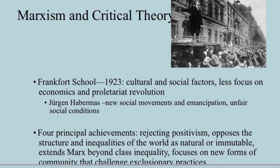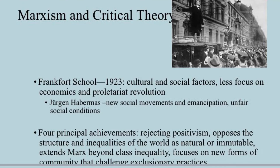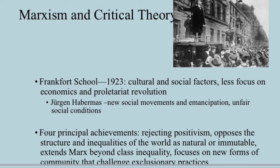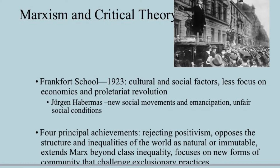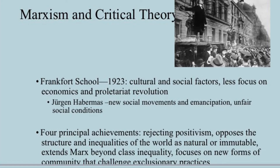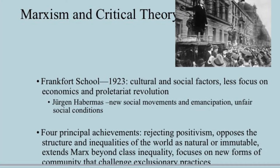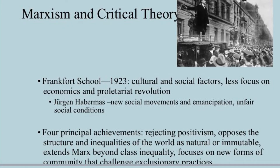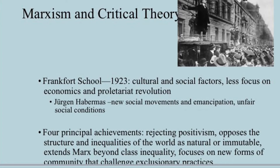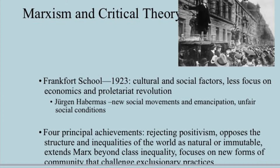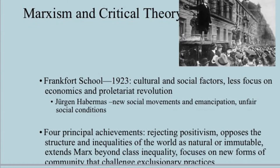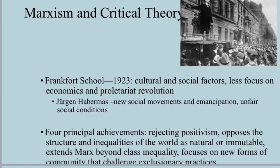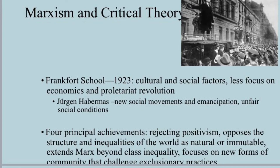Other Marxist schools like the Frankfurt School and Habermas relate to the importance of social and cultural factors in addition to economic hegemony. Habermas' work focused on the role of cross-cultural social movements and forces that could attempt to draw attention and bring about change to unfair social conditions around the world, often taking the form of international organization work. Unlike Gramsci, he did not always believe that international organizations were negative, saying they could be used to form networks of human rights protection. Most Marxists reject the strict positivist view and move beyond economics and class inequality to focus on new forms of community that challenge exclusionary practices, and for some new Marxists, the state is one of those exclusionary practices in and of itself.